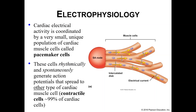You also have another type of cell that makes up your heart: contractile cells. The pacemaker cells set the pace of heart contraction, but the contractile cells are the ones actually doing the contracting. It should make sense that we have quite a few more contractile cells compared to pacemaker cells — in fact, approximately 99% of your cardiac cells are the contractile cells themselves.